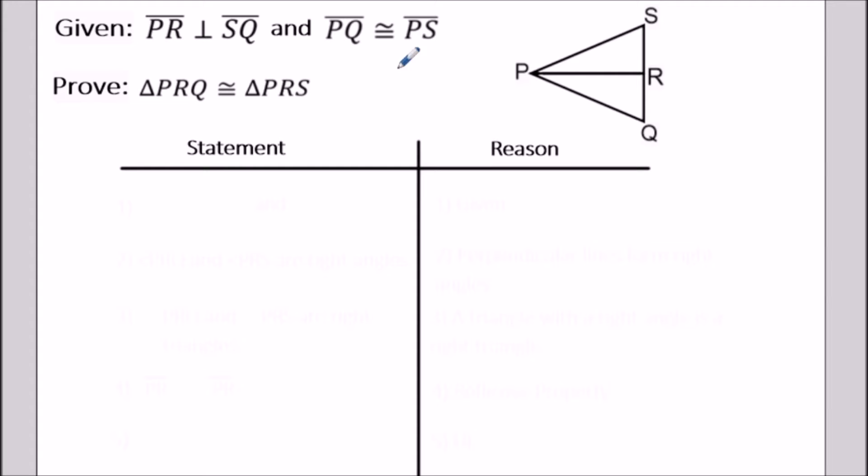The first thing I recommend is when you read the givens, translate them onto the diagram. So if PR is perpendicular to SQ, that means we have two right angles at the intersection at point R.